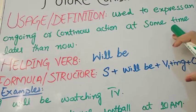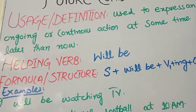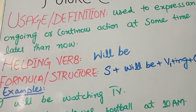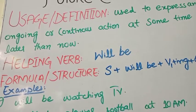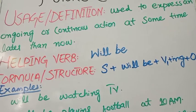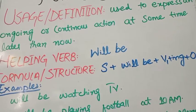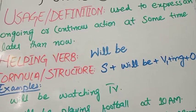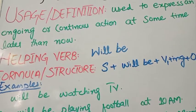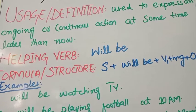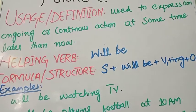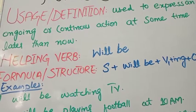We also use future continuous tense for expectations and guesses. For example, if I am guessing what I will be doing in the evening, I might say: I will be making pizza in the evening, or I will be having dinner at my friend's house. Or talking about my sister: she will be learning the lesson in the room, she will be shopping. So our expectations about what will be ongoing are expressed using future continuous tense.